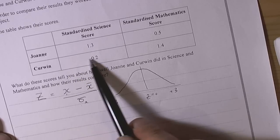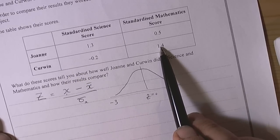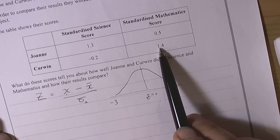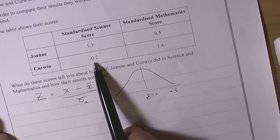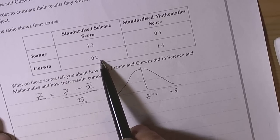And Kerwin did better than average in maths, positive 1.4, and much better than Joanne. So he's much stronger at maths. But his negative score here suggests that in science he's below average.